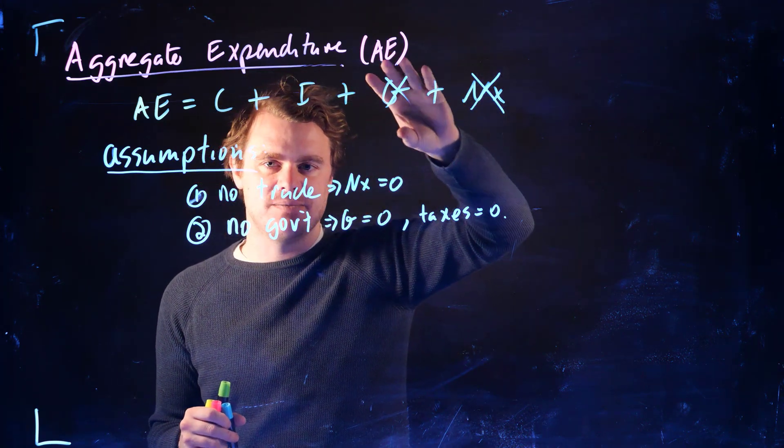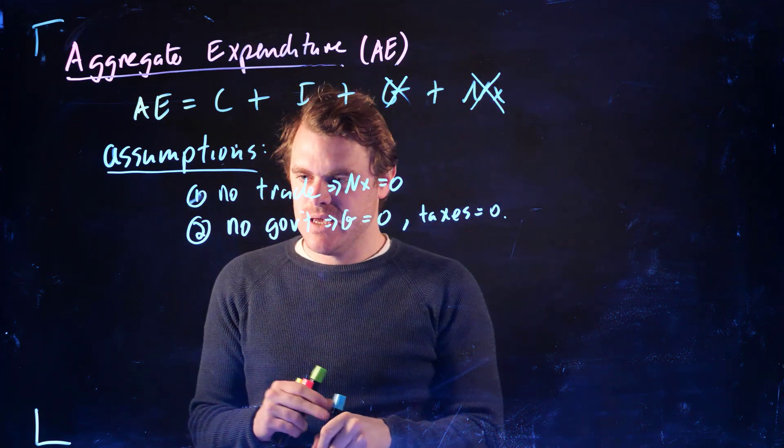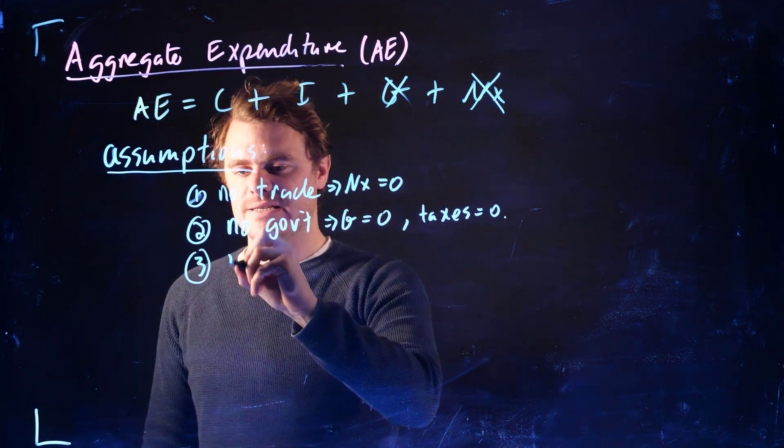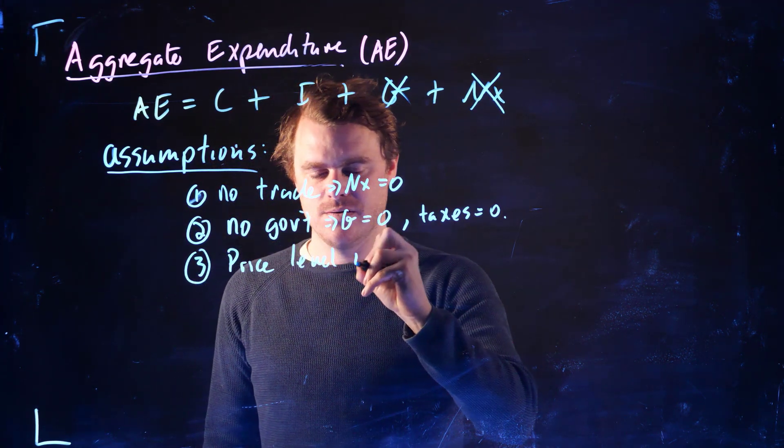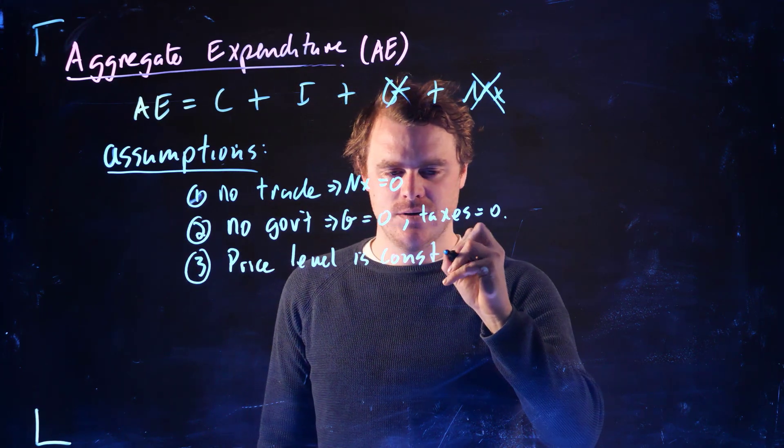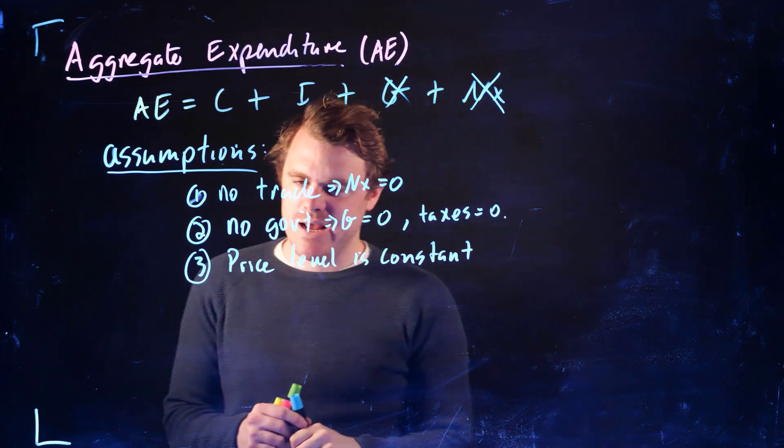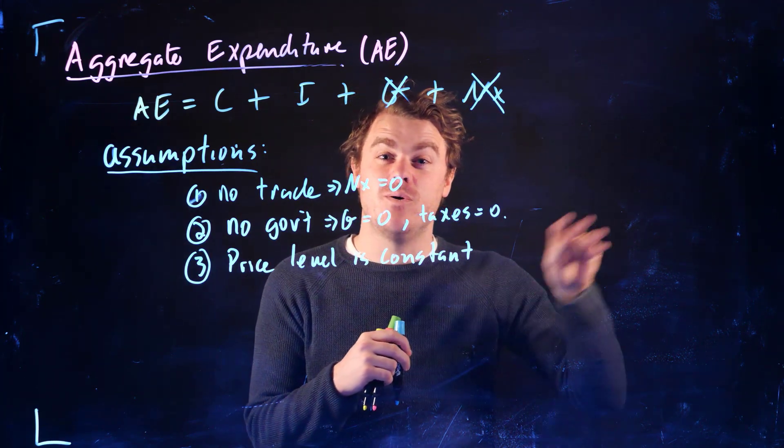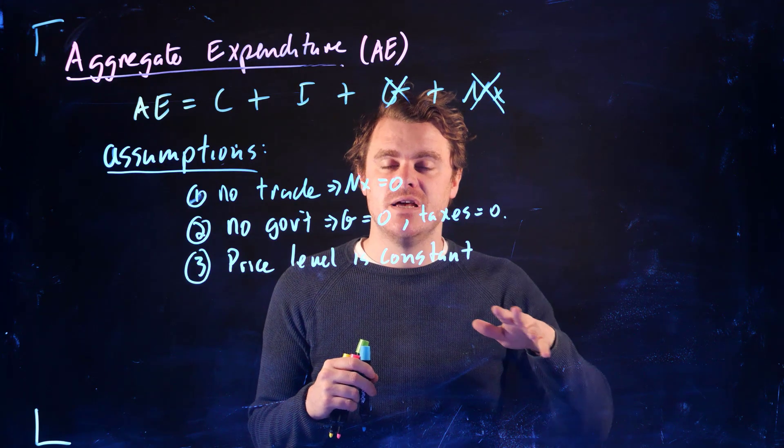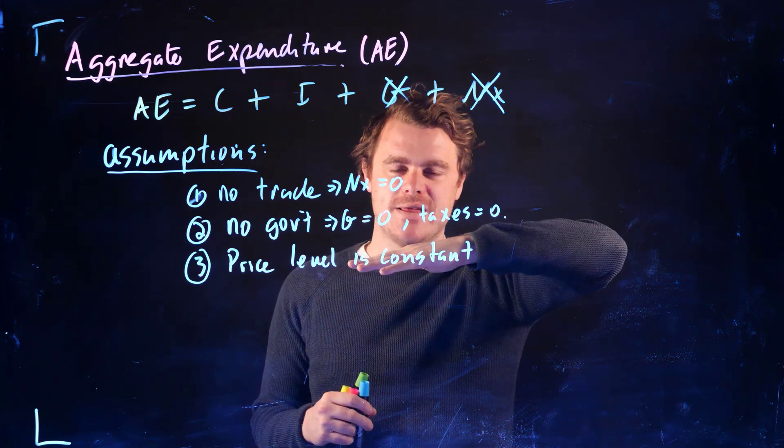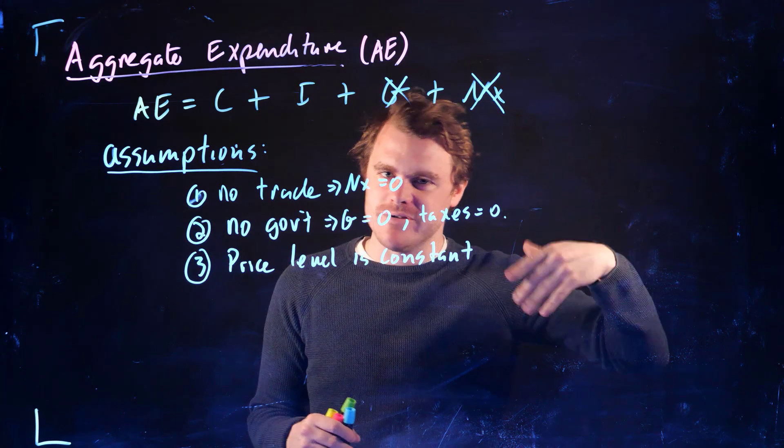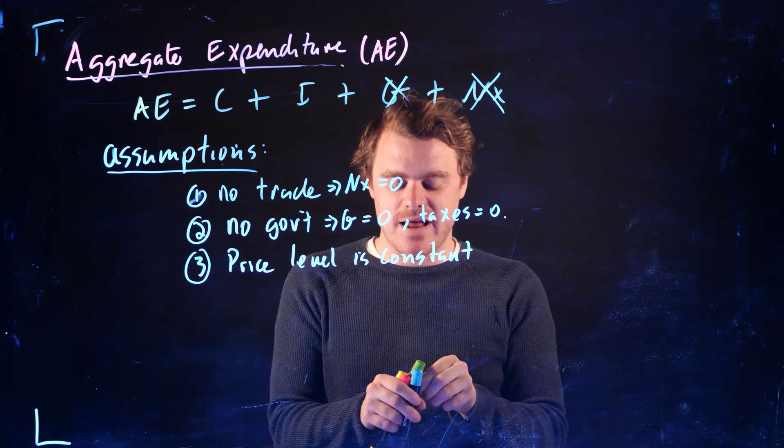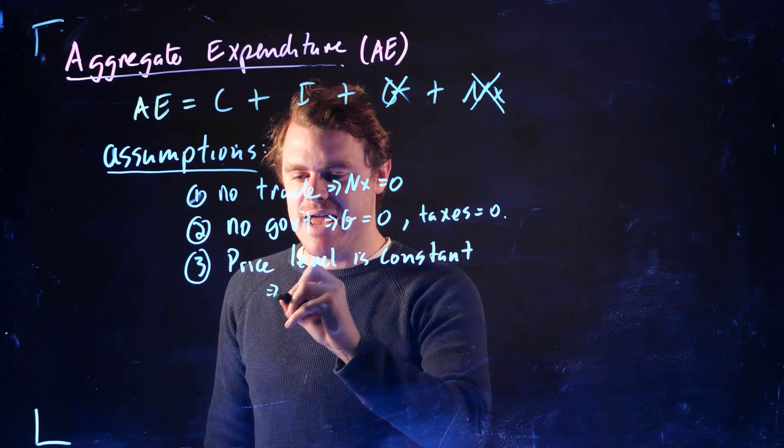And then we're going to add these back in the next module. So the third assumption that we're going to make is that the price level is constant. And what this price level constant really fundamentally means is that we're ignoring the supply side of the economy. We're almost just assuming that the aggregate supply curve, which we'll talk about in the future, is flat. We're really going to concentrate on the demand side of the economy. So this is going to be a demand-driven model.